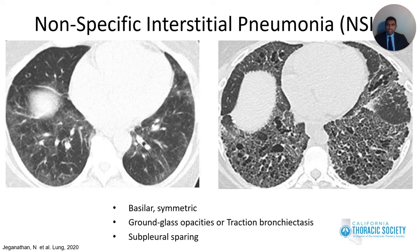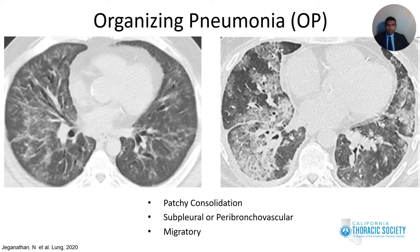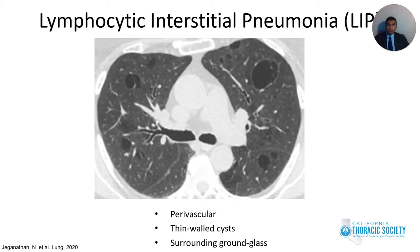Non-specific interstitial pneumonia (NSIP) pattern refers to basilar symmetric ground glass opacities. As the condition progresses, patients can develop a fibrotic NSIP pattern with traction bronchiectasis, and subpleural sparing may also be noted. Organizing pneumonia presents with patchy consolidation that can be subpleural or peribronchovascular, and the opacities can be migratory — appearing in different areas on CT scans performed at different time points. Lymphocytic interstitial pneumonia (LIP) refers to perivascular or peribronchiolar thin-walled cysts with associated ground glass opacities.